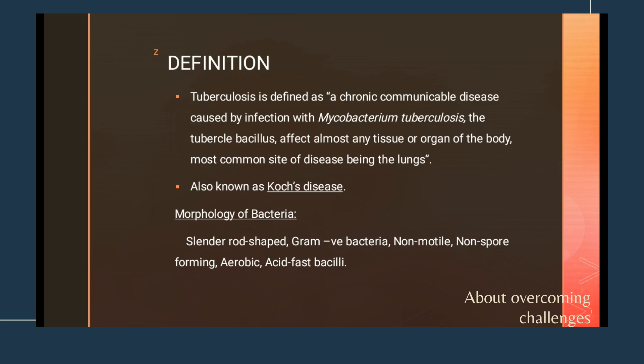Morphologically, Mycobacterium tuberculosis is slender and rod-shaped. It is gram-negative, meaning the cell wall is thin and does not contain peptidoglycans. It is non-motile, non-spore forming, and lives in aerobic conditions — meaning it requires the presence of oxygen. It is also classified as acid-fast bacilli.